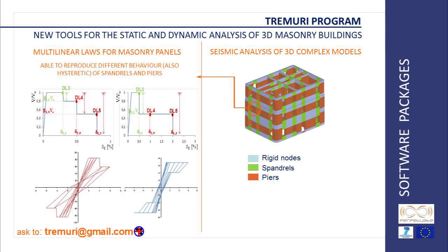Tremory, a program developed from 2002 at the University of Genoa, models the global response of a masonry structure by the equivalent frame approach. It is particularly suitable for 3D complex models of palaces and other assets of Class A.